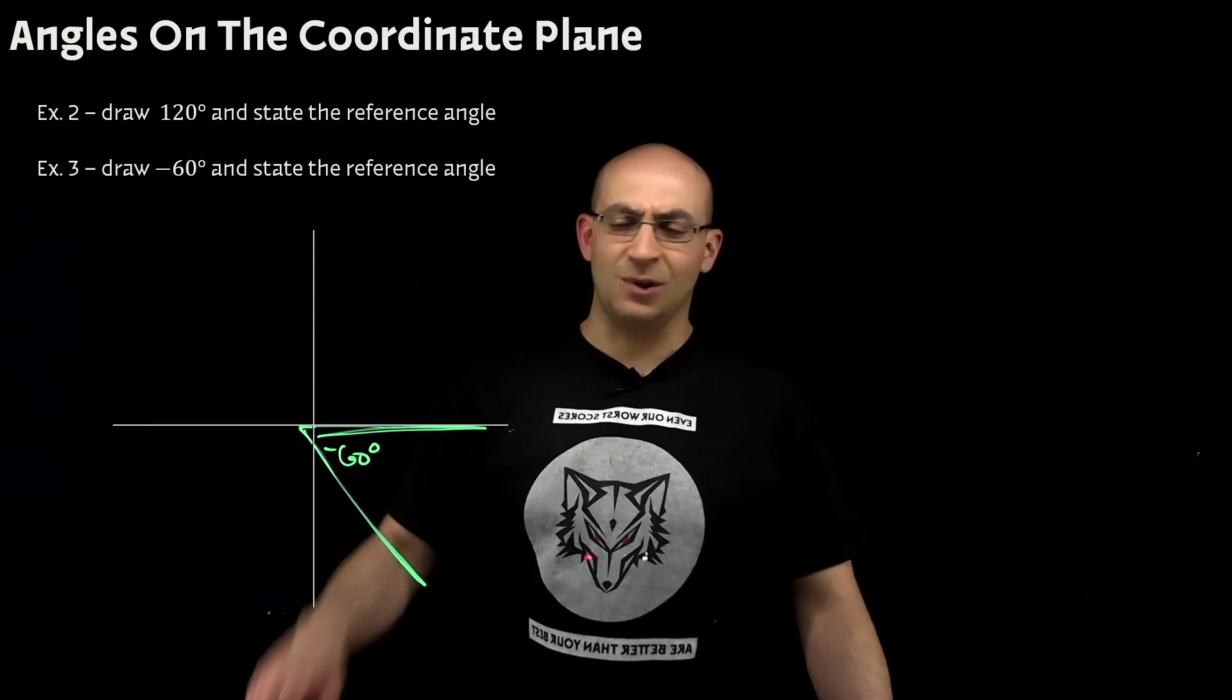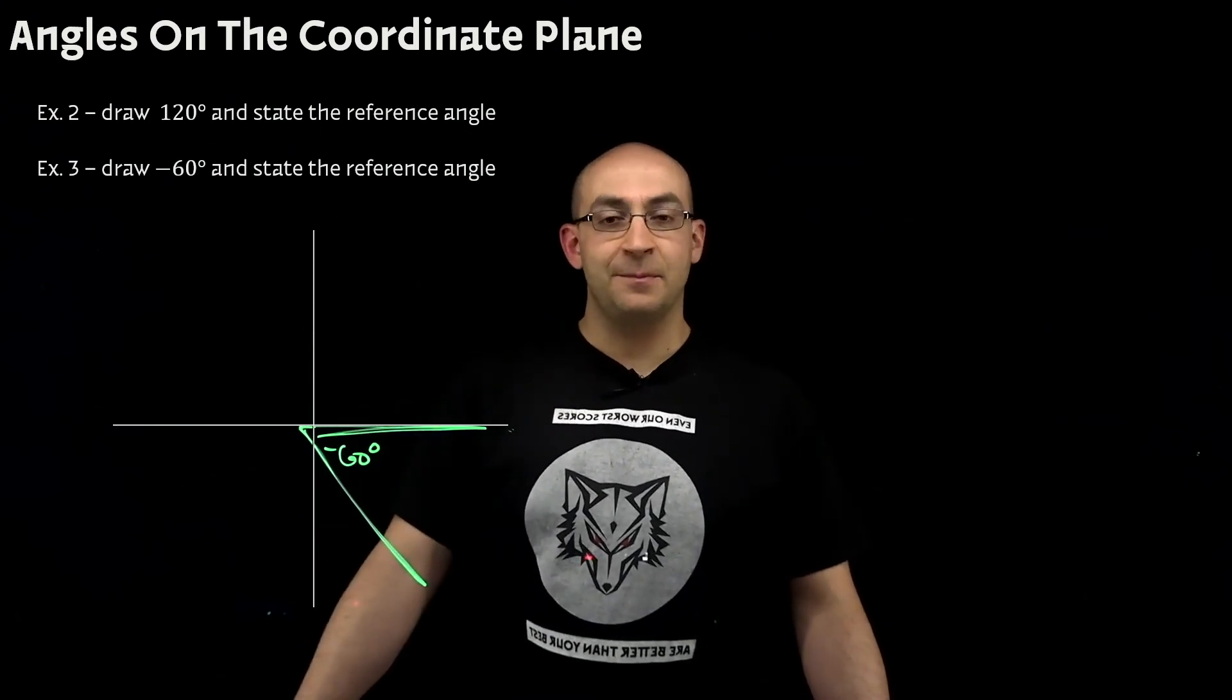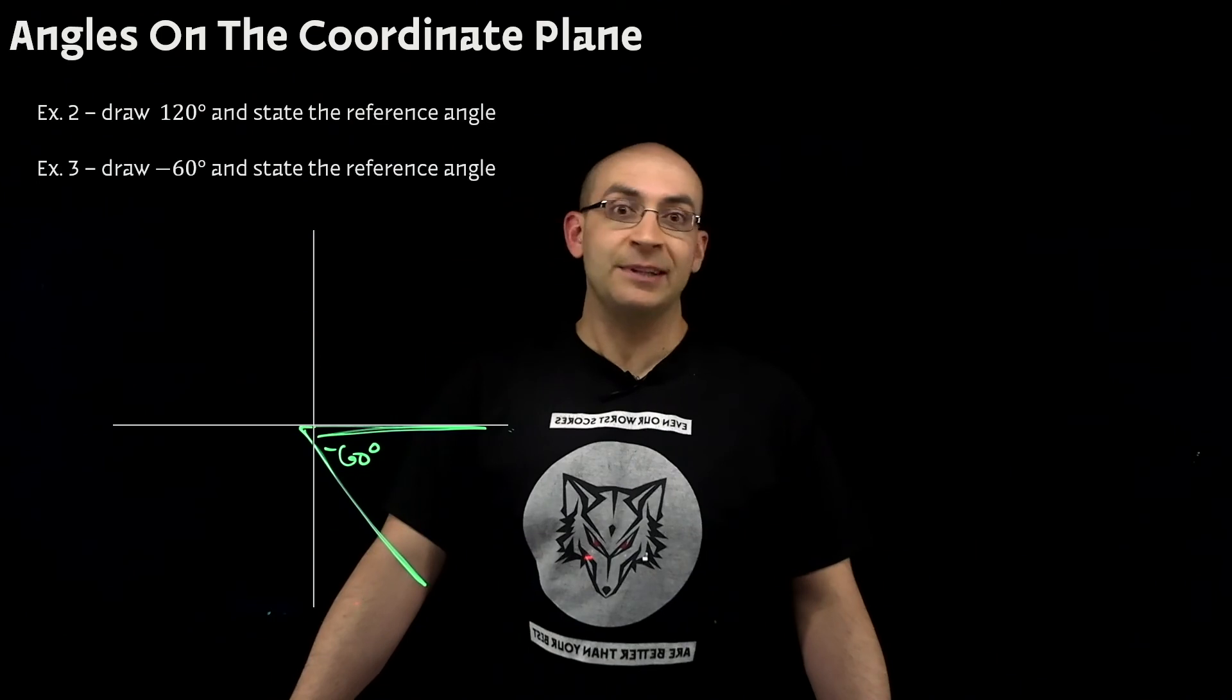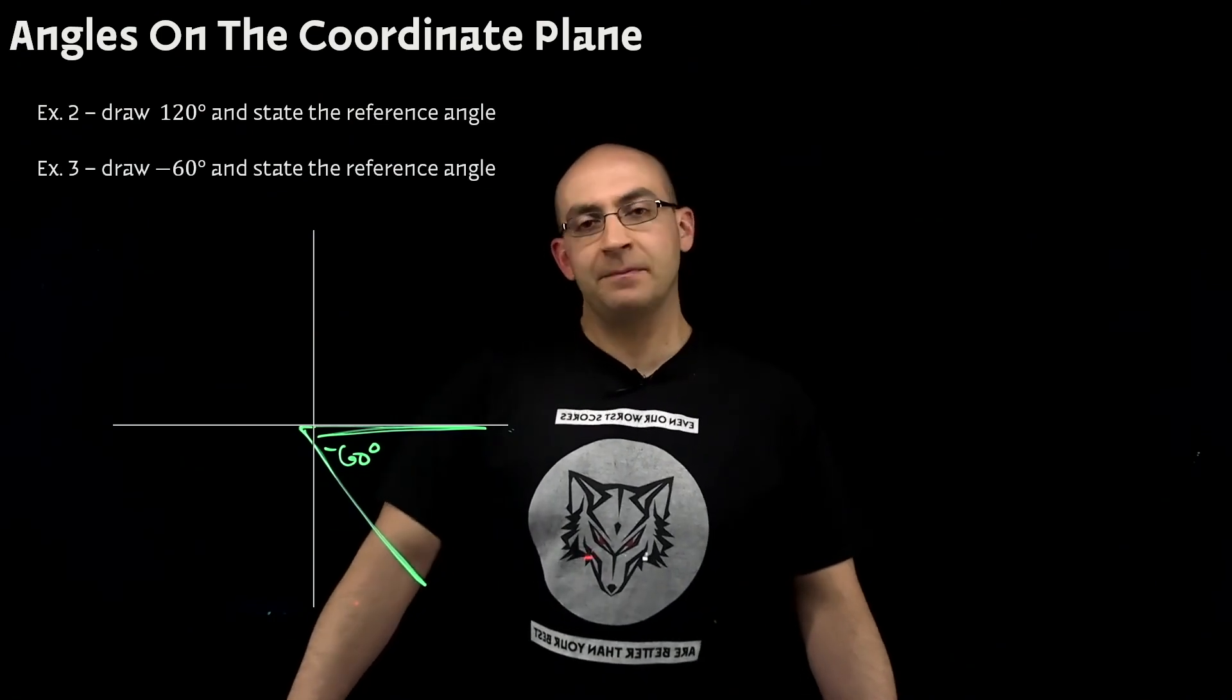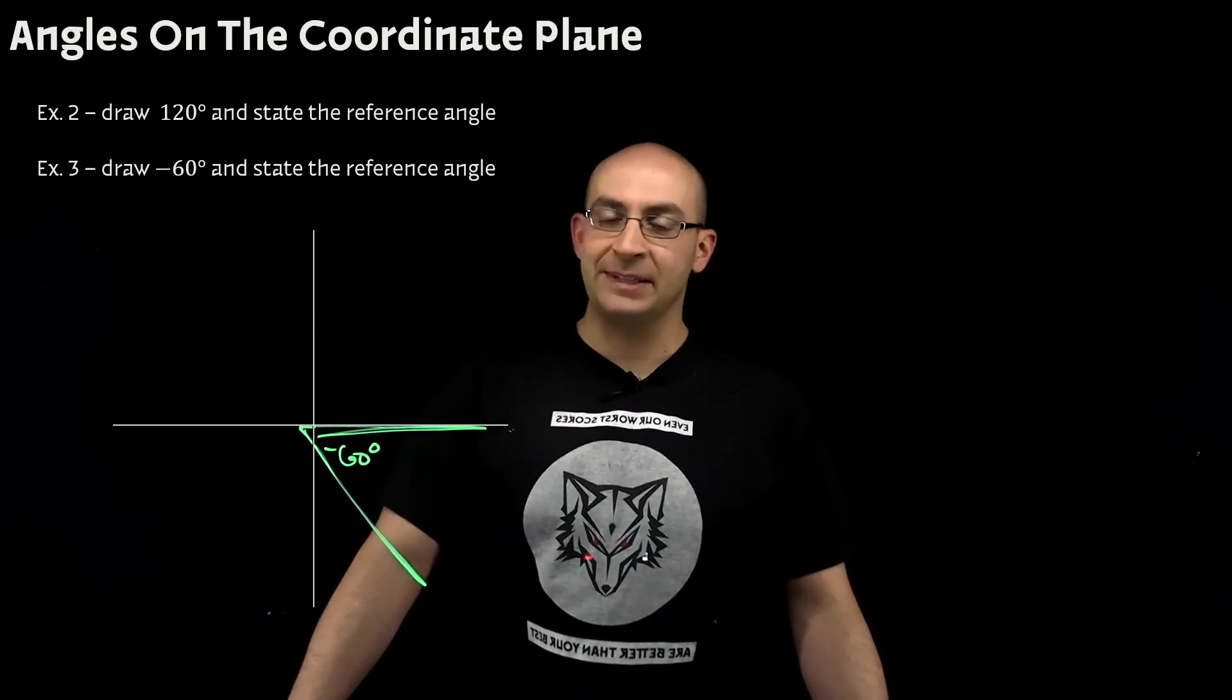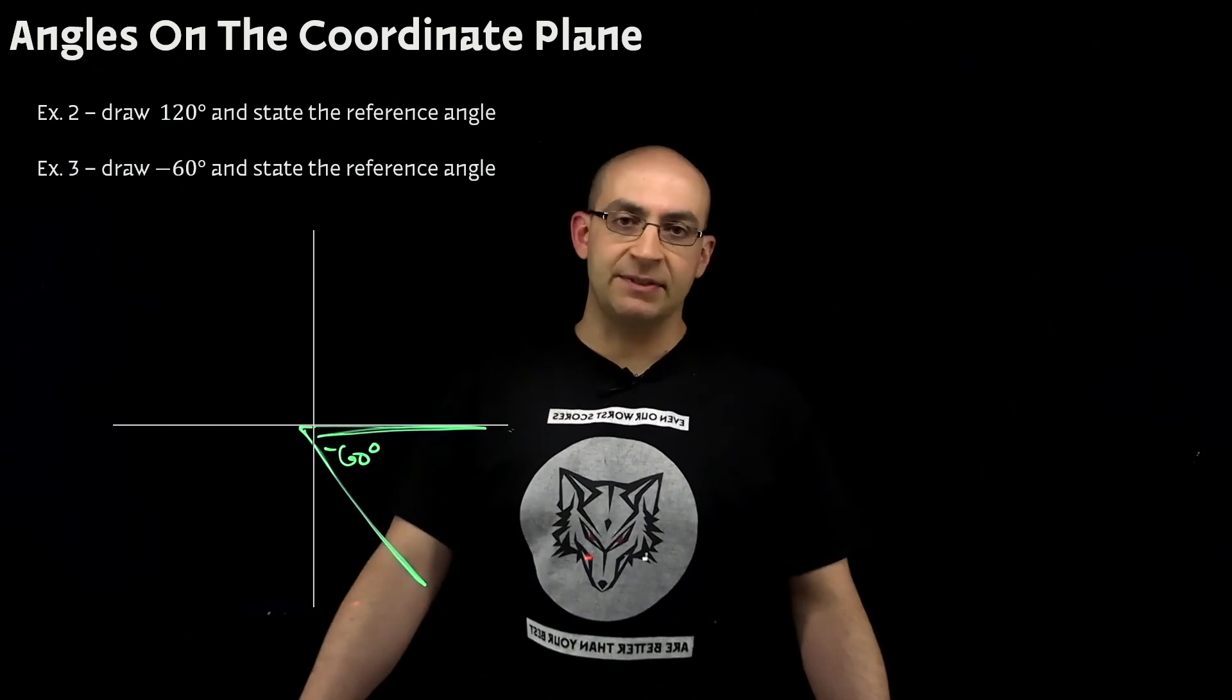Because if I went from negative 60 all the way around to the other side, then I would have an obtuse angle, which defeats the purpose of a reference angle. And then some of you are thinking, well, is it just 60 going backwards? Then you'd be right. Doubly right. This was a trick question.